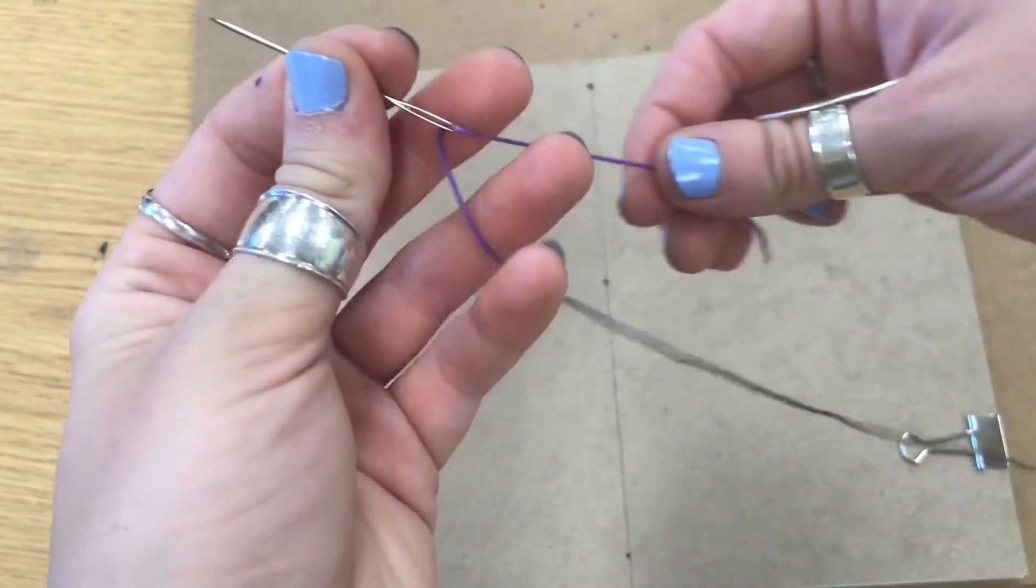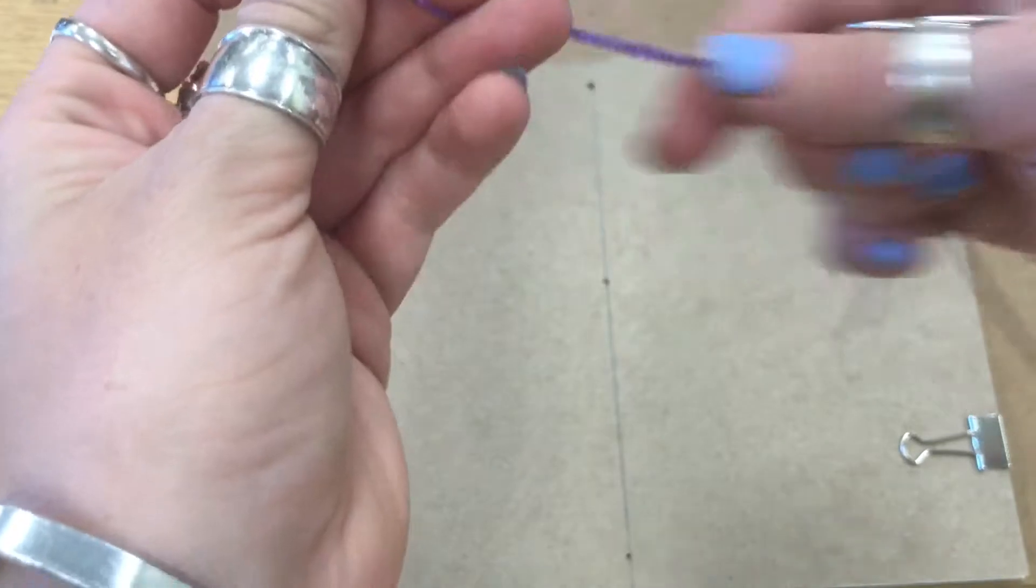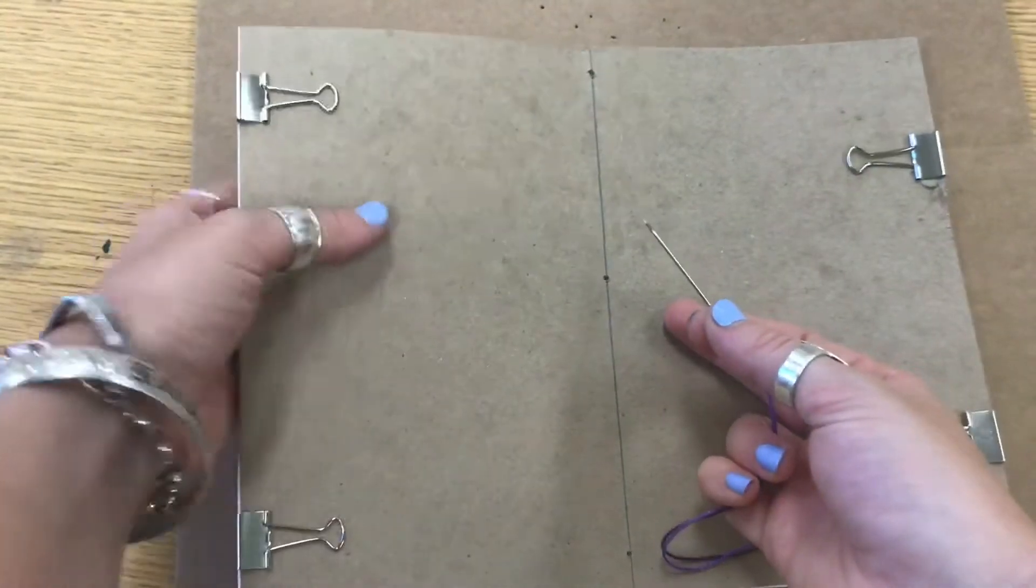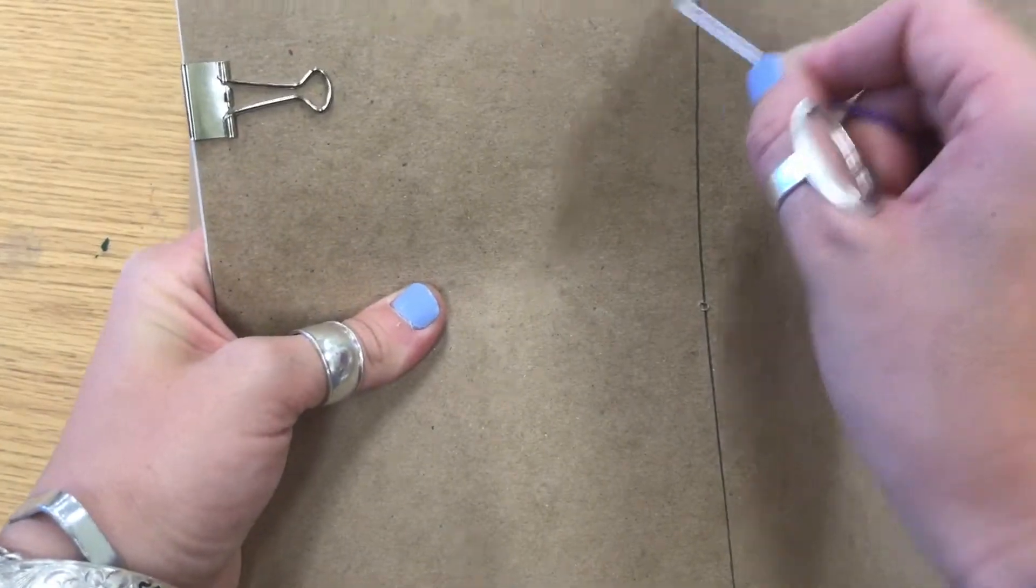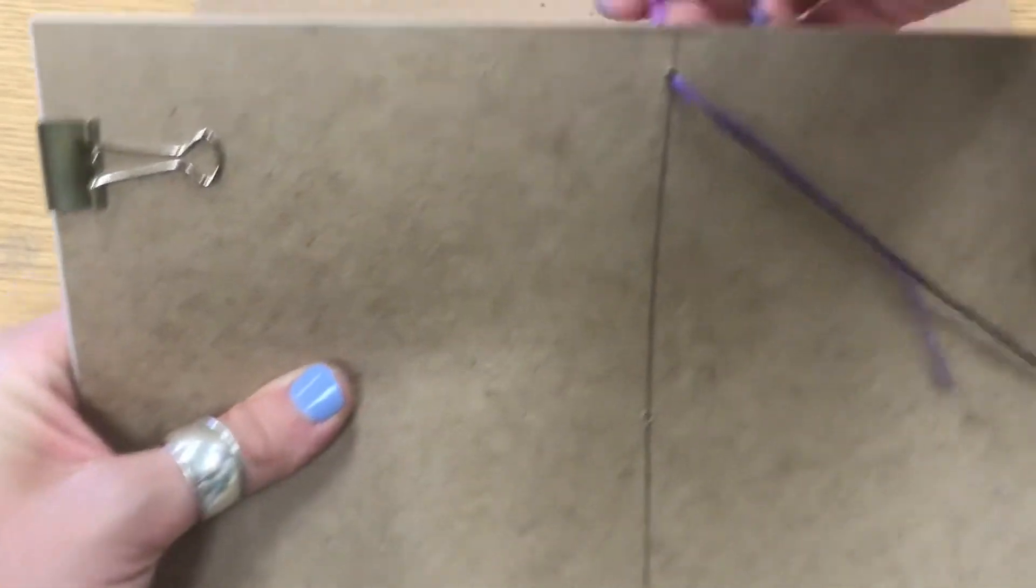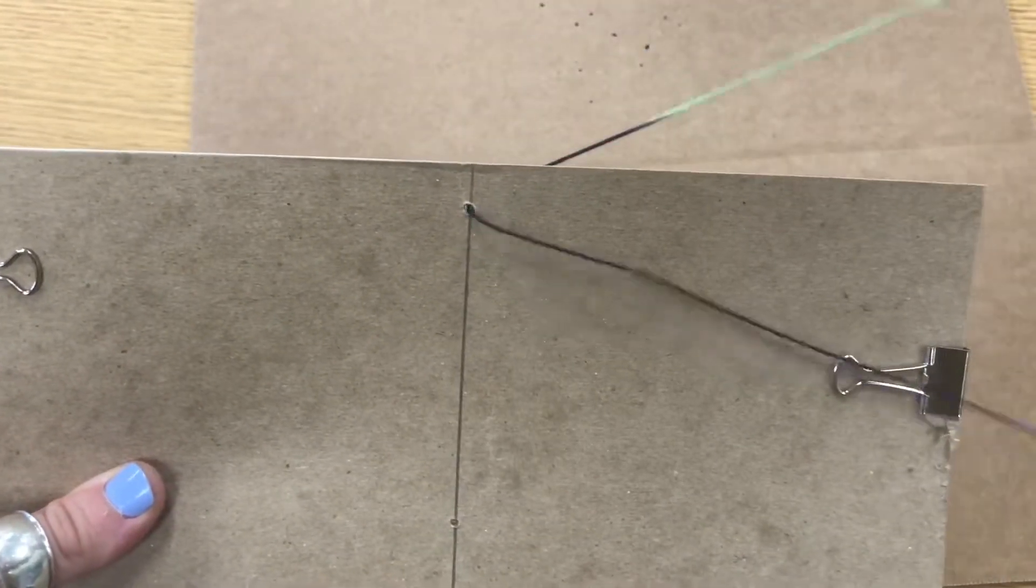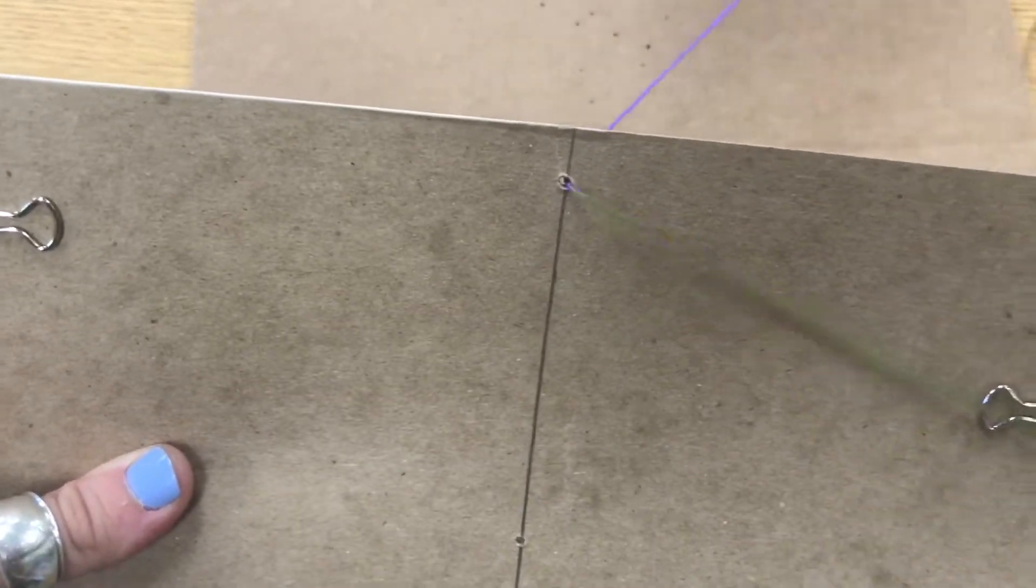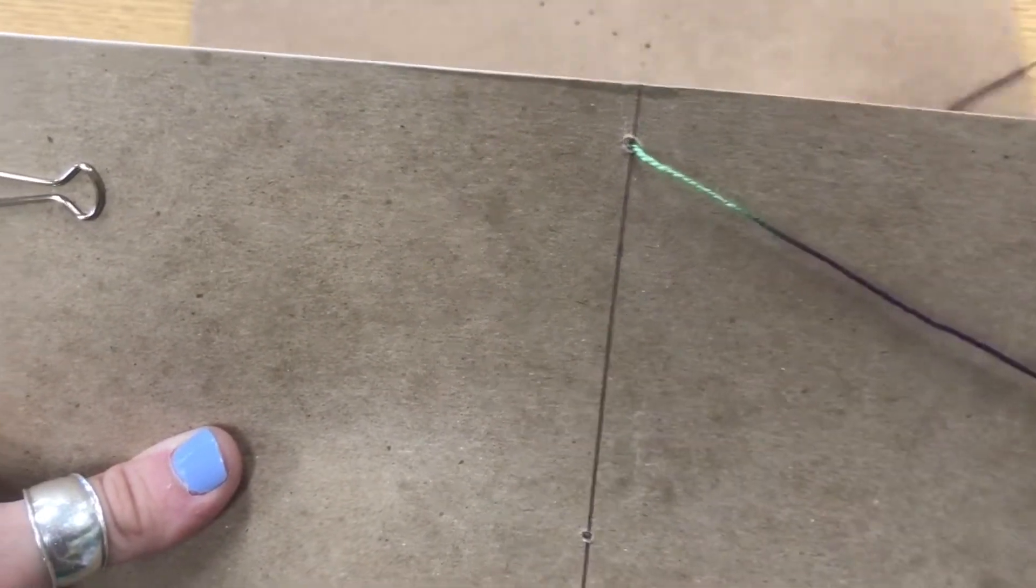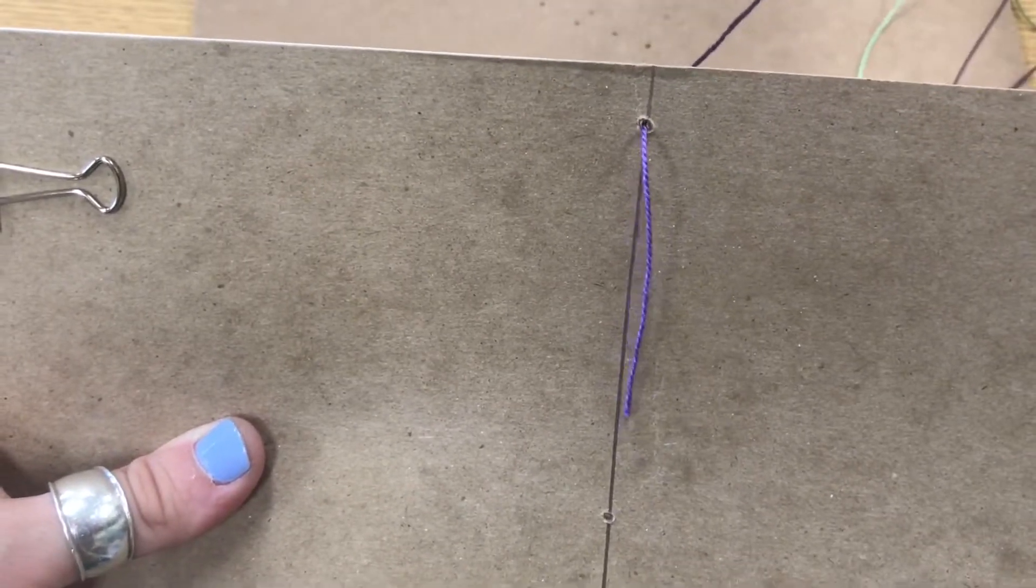All right, next we're going to take our needle, which should be threaded for you, and we're going to start our weaving. Weaving is just in and out, and we're going to start from the back where the cardboard is. We're going to stick our needle through and pull our string all the way through until you get a little tiny tail.